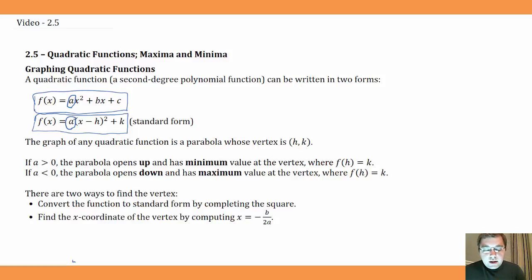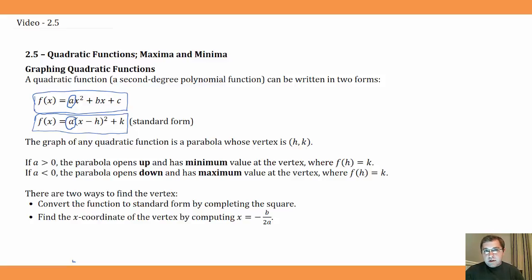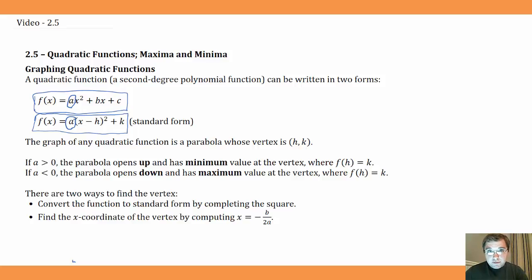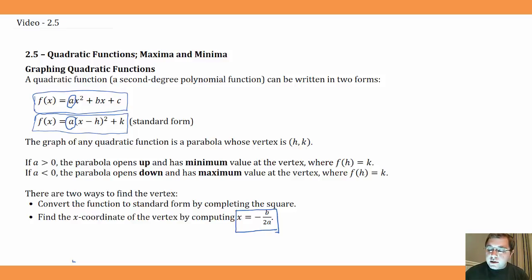The vertex of the parabola is (h, k). That's the advantage of standard form — it immediately gives you the vertex as (h, k). If a is positive, the parabola opens up and has a minimum value at the vertex. If a is negative, the parabola opens down and has a maximum value at the vertex. There are two ways to find the vertex: convert the function to standard form by completing the square, or find the x-coordinate using x = -b/(2a), then plug that in to find the y-coordinate.